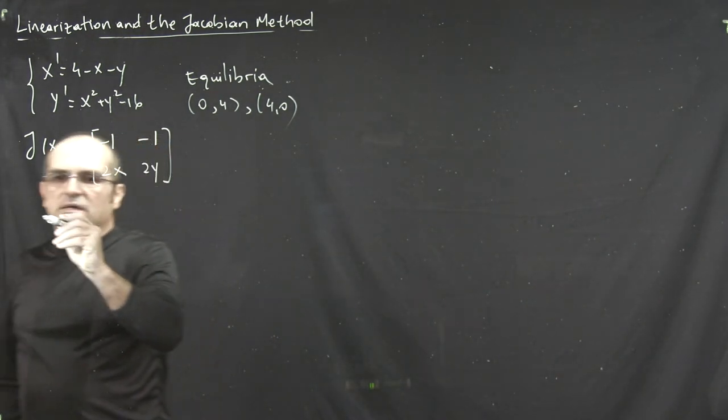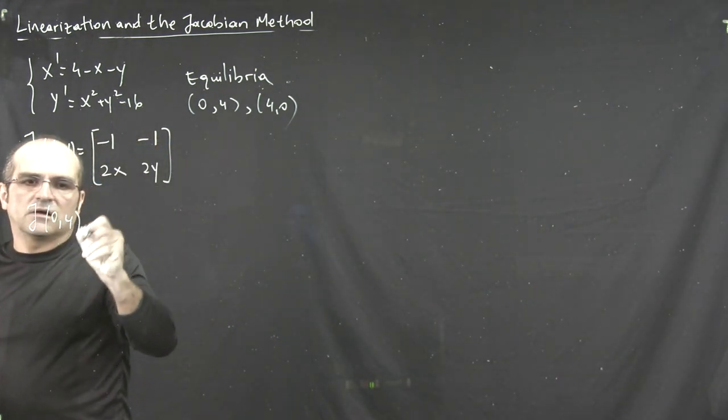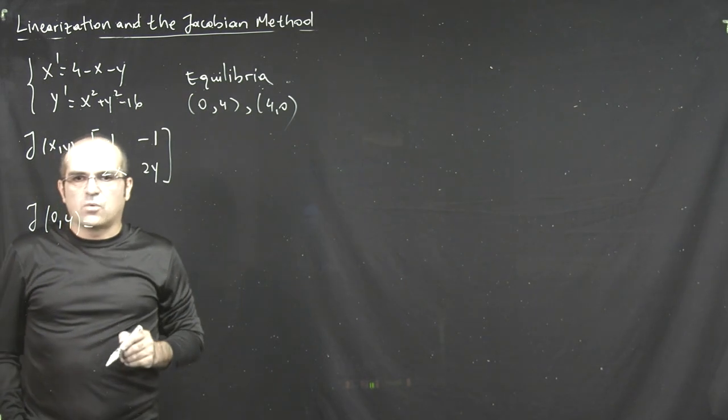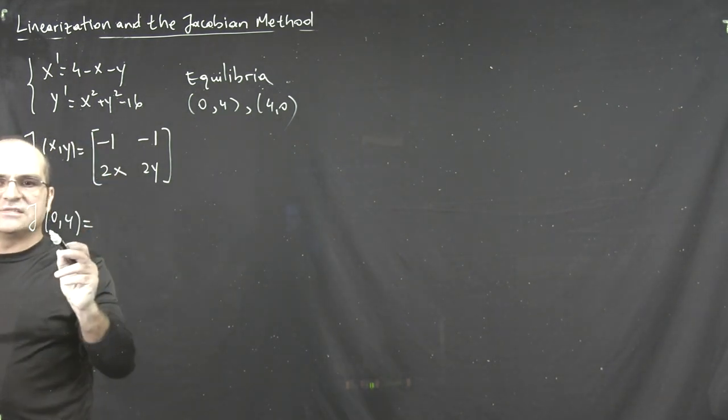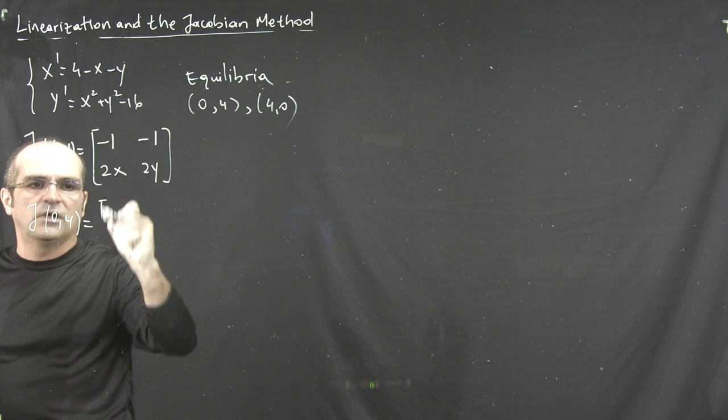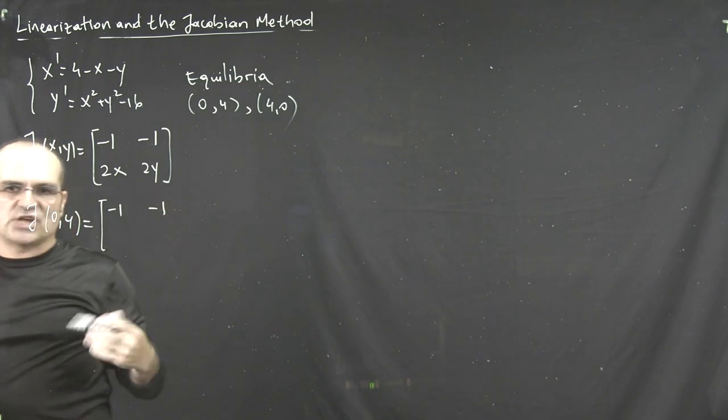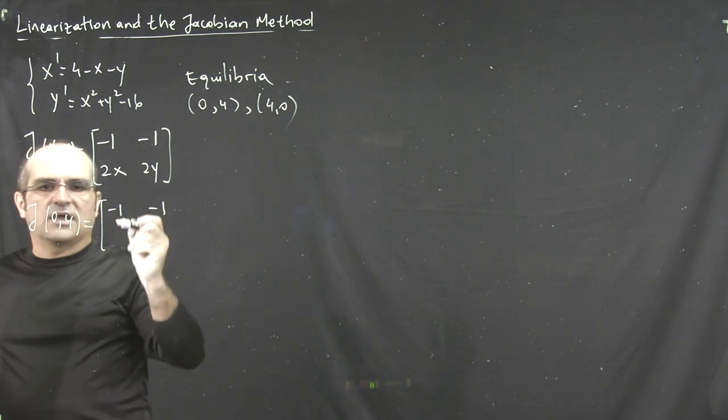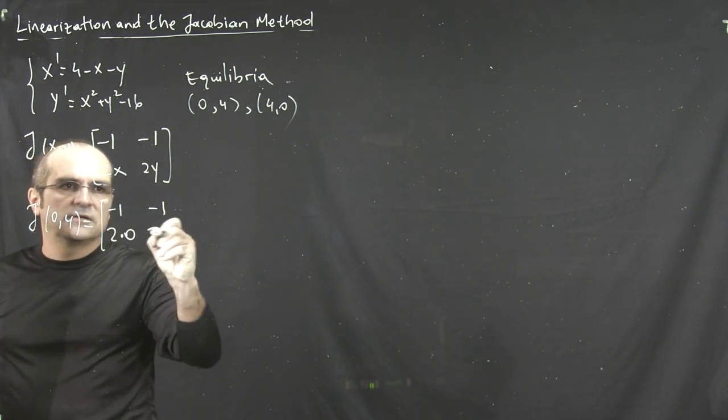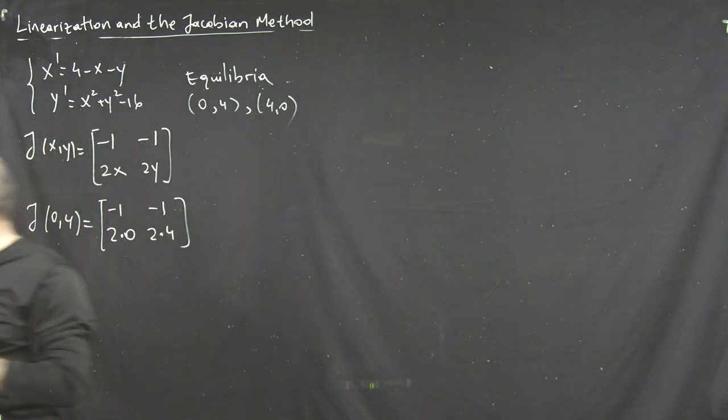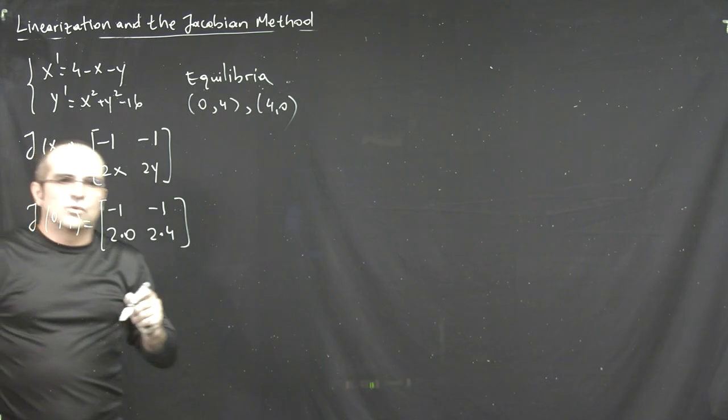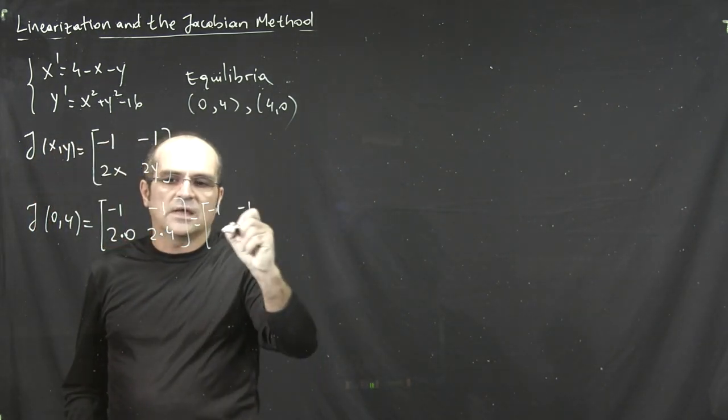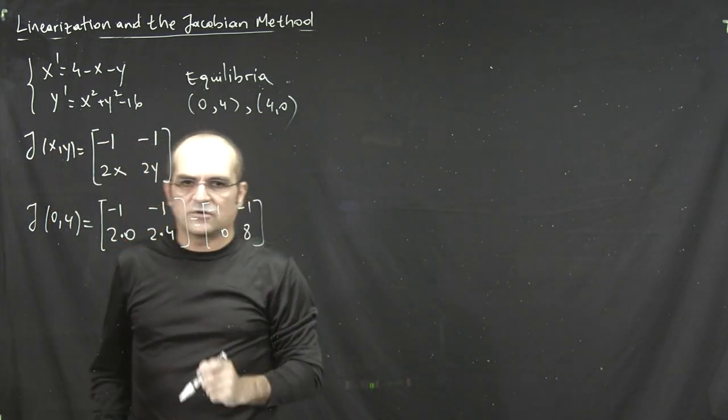So the first equation. Partial x of the second one is 2x. Partial y of the second function is 2y. So very simple Jacobian matrix. Again, carefully replace each coordinate with the coordinates of the equilibrium point. So x naught, y 4. We're testing this equilibrium point now. Now obviously the first row doesn't change because it's a constant. Here we plug in 0 for x and 4 for y.